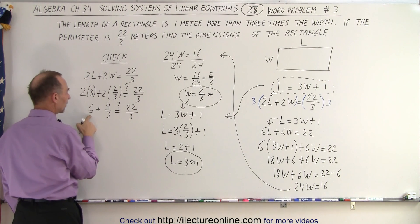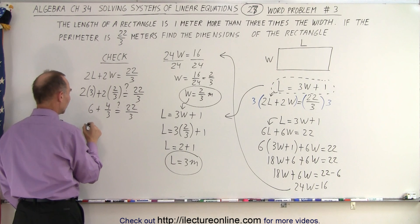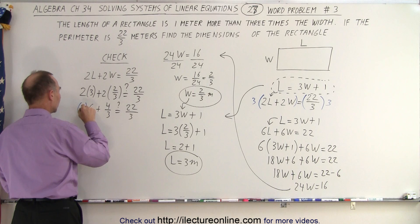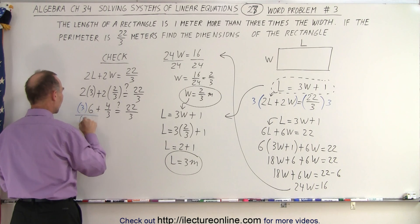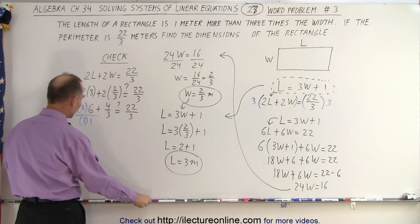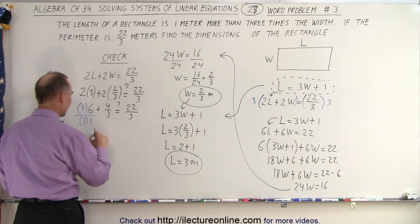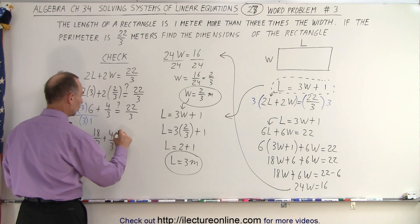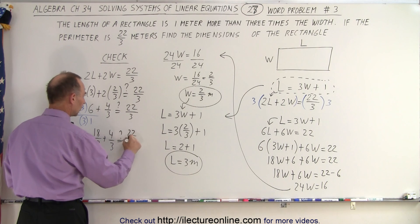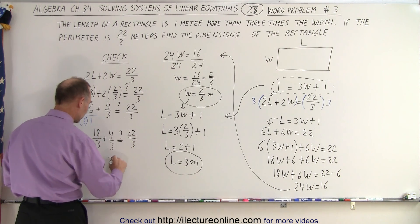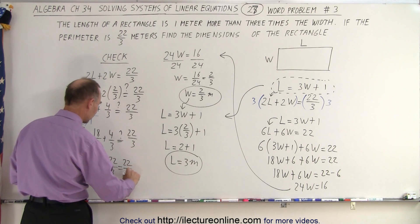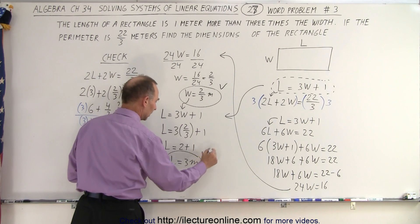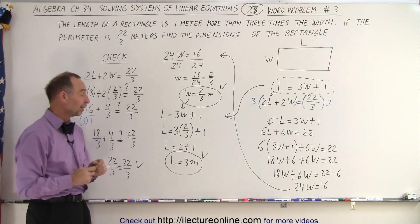So we need to put this over the same common denominator of 3. So I'm going to multiply both the top and the bottom by 3. So multiply the numerator by 3 and multiply the denominator by 3. And of course denominator would be equal to 1. So here we have 18 over 3 plus 4 over 3. Is that equal to question mark 22 over 3? And sure enough, 22 over 3 is equal to 22 over 3. That's correct. So therefore, we know that the width is correct and the length is correct. And that is how we solve the problem.